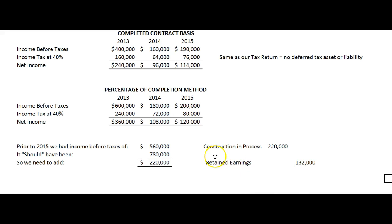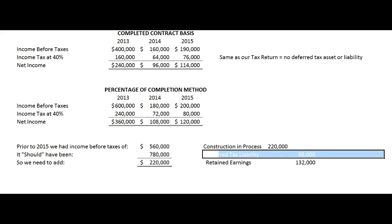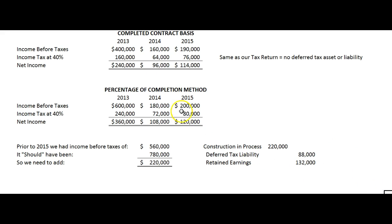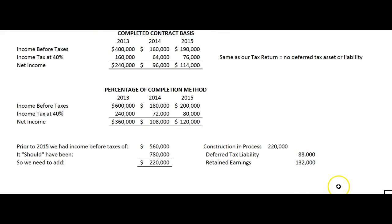The difference is a deferred tax liability. On our books we would have had $240,000 in tax expense versus $160,000 on our tax return — a difference of $80,000. In another year we would have had $72,000 on our books versus $64,000 on our tax return — a difference of $8,000. So this $80,000 plus this $8,000 difference between our tax return and our books gives a deferred tax liability of $88,000.